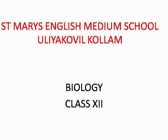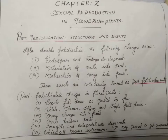Today our biology topic is post-fertilization events and structures. Fertilization is defined as the fusion of male and female gamete to form a diploid zygote. After fertilization, a series of events occurs in the zygote to develop into a seed. The product of fertilization is a zygote, and this zygote undergoes division to form the seed.